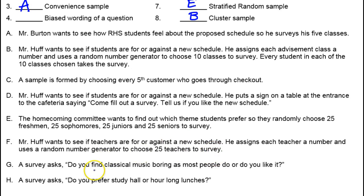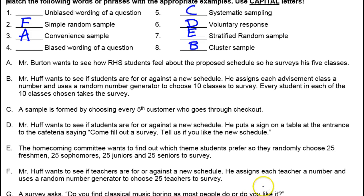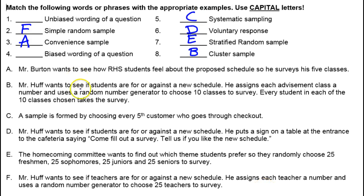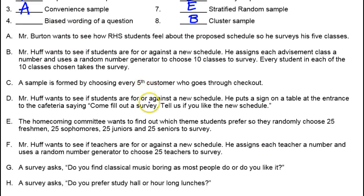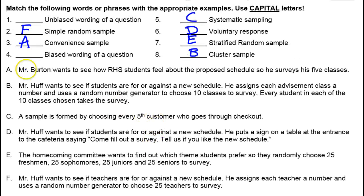A survey asked: do you find classical music boring, as most people do, or do you like it? That's an example of biased wording of a question. So G goes here.